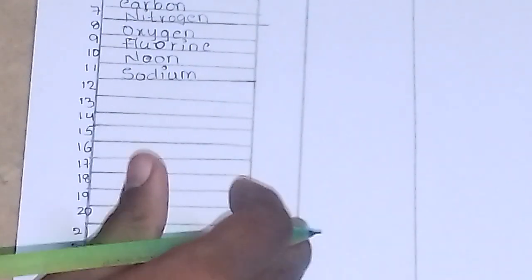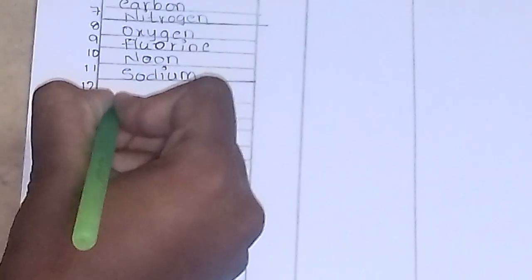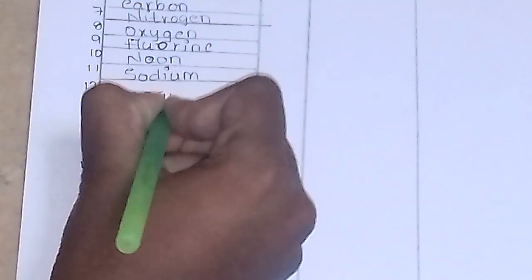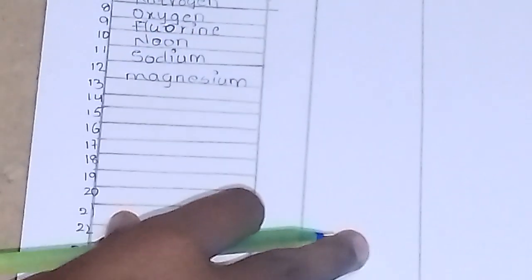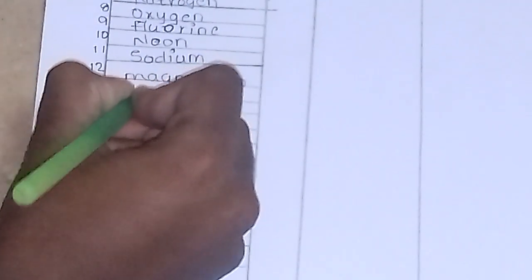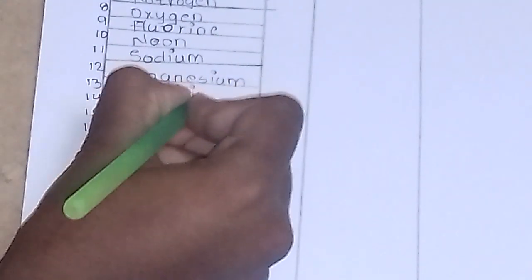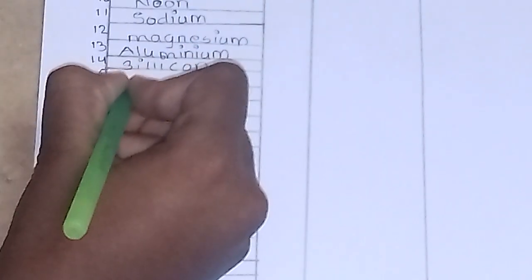The eleventh one is sodium. The twelfth is magnesium. The thirteenth is aluminum. The fourteenth is silicon. The fifteenth is phosphorus.